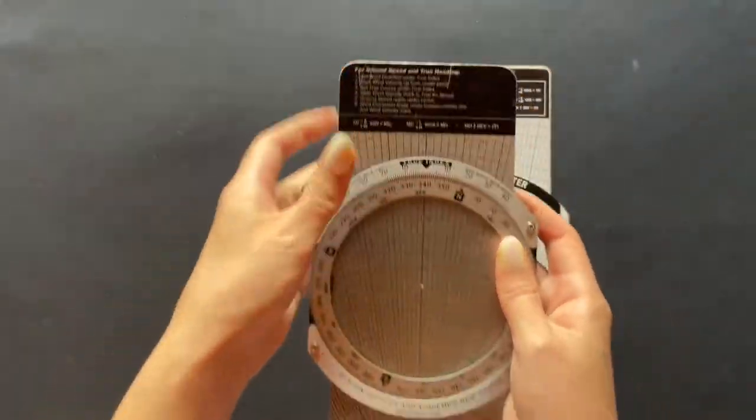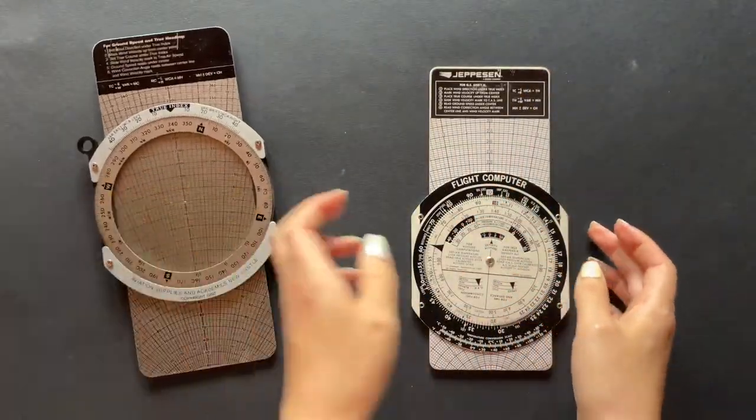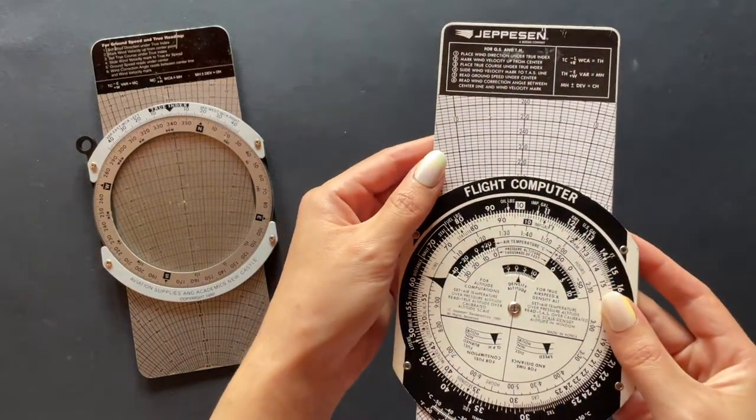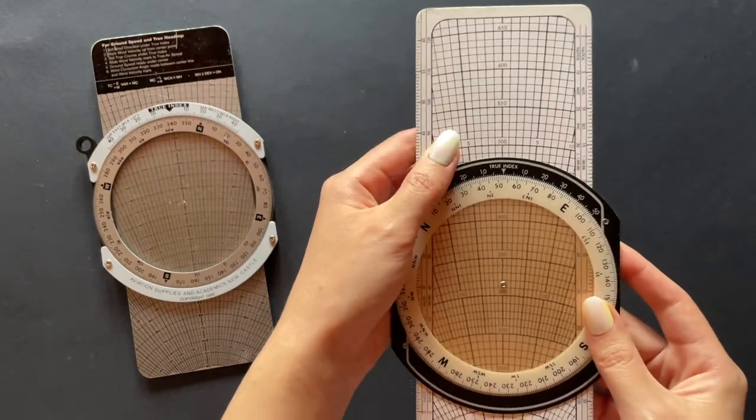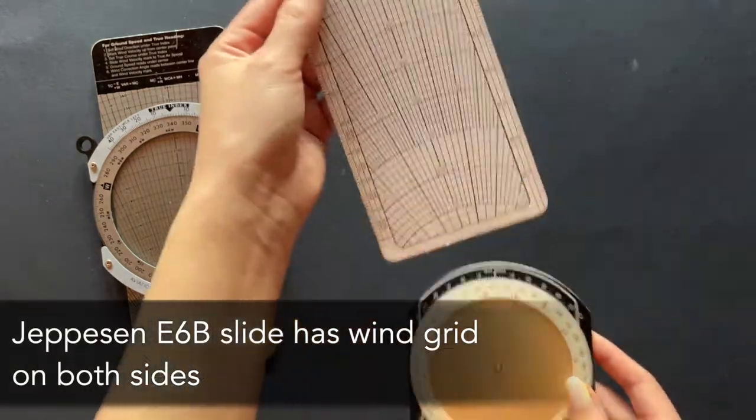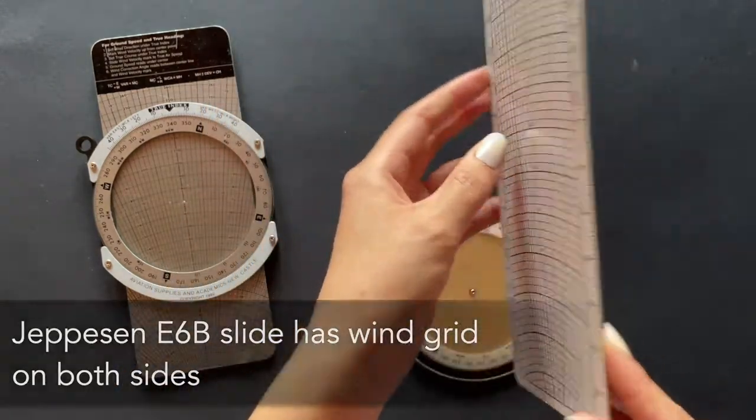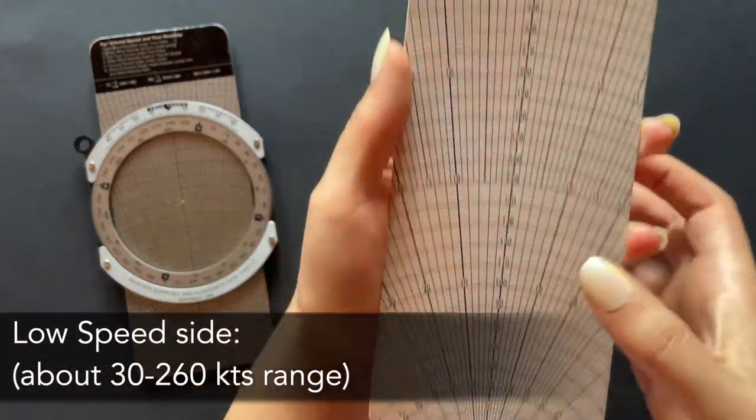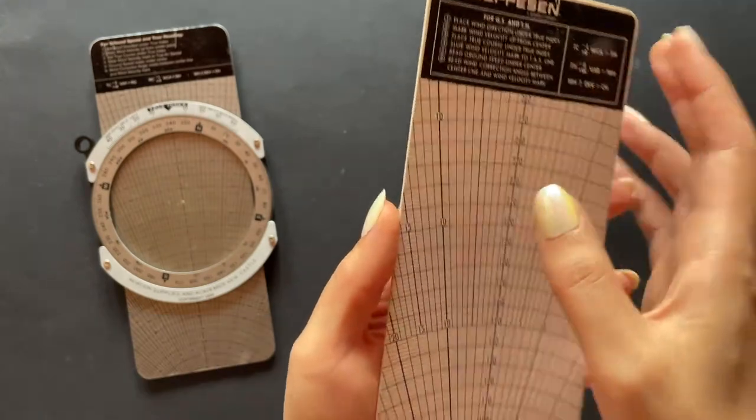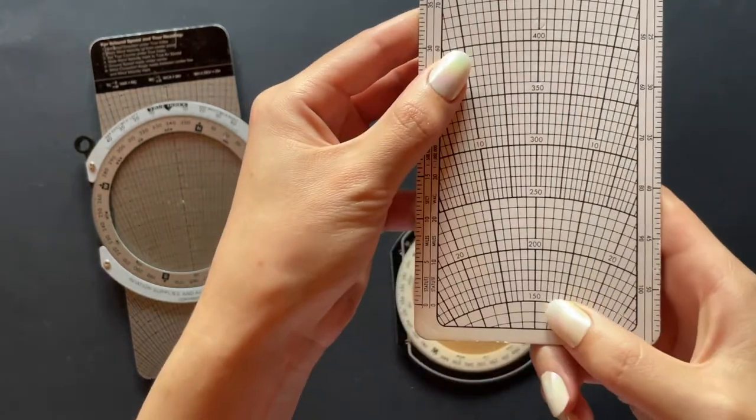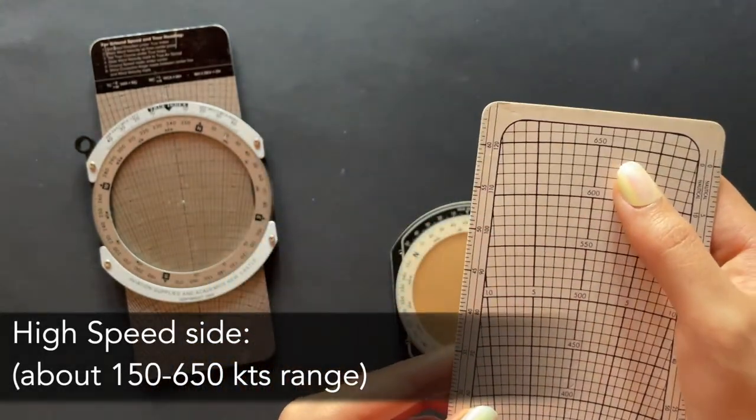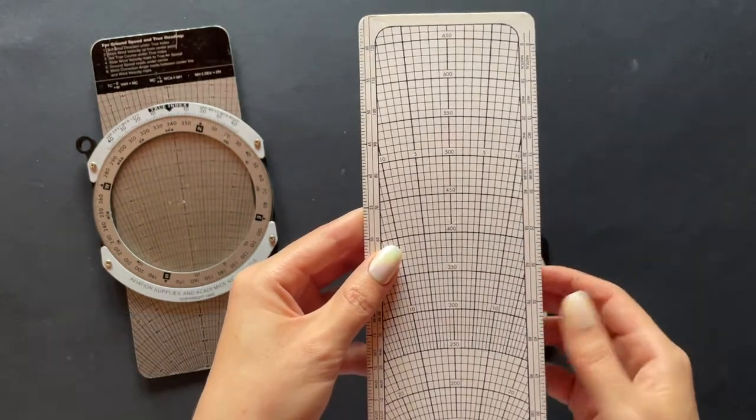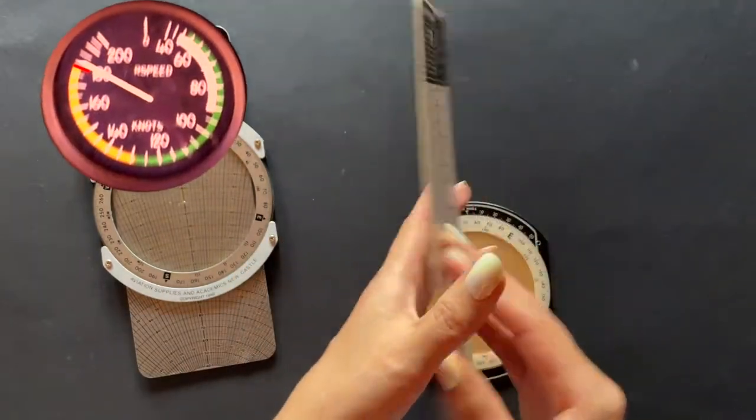However, if you happen to have the other popular brand of E6Bs by Jeppesen, their E6B comes with a slide that has a wind graph on both sides. If you pull it all the way out, you will see how on one side has numbers ranging from about 30 to 260, while on the other side has about 150 to 650. This side is for higher speed ranges that are beyond the red line for most training aircraft.